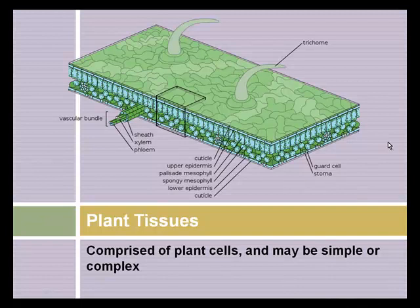That covers cells — now we're going to move up to plant tissues. Plant tissues are combinations or groups of cells that together may be simple or complex, but they begin to form the parts that provide the essential functions of plants. This image of a leaf surface shows how various types of cells are organized into layers or groups of tissues.